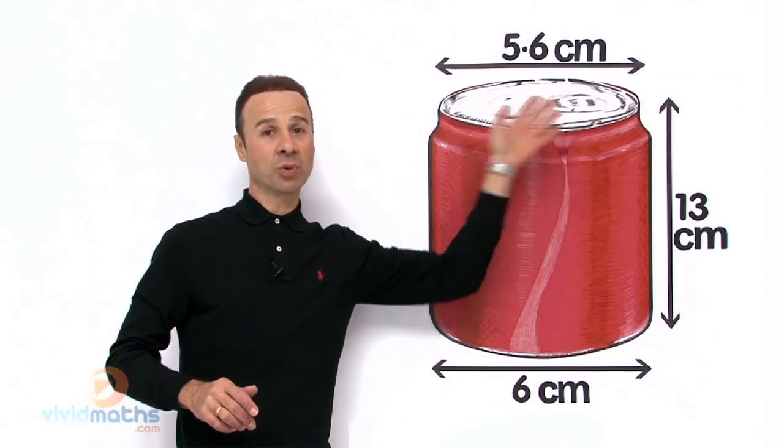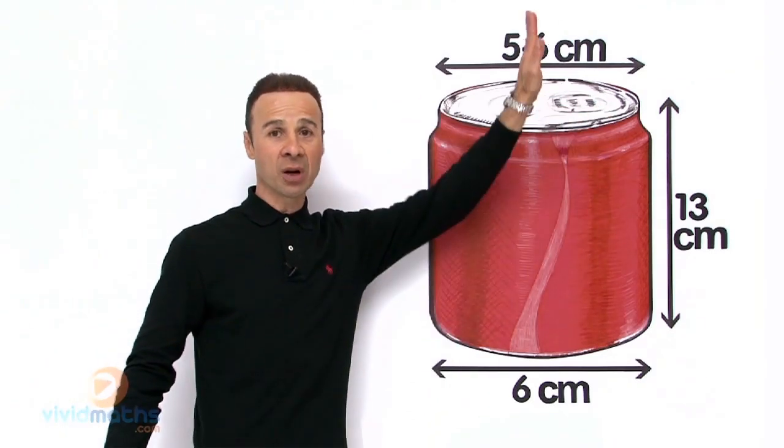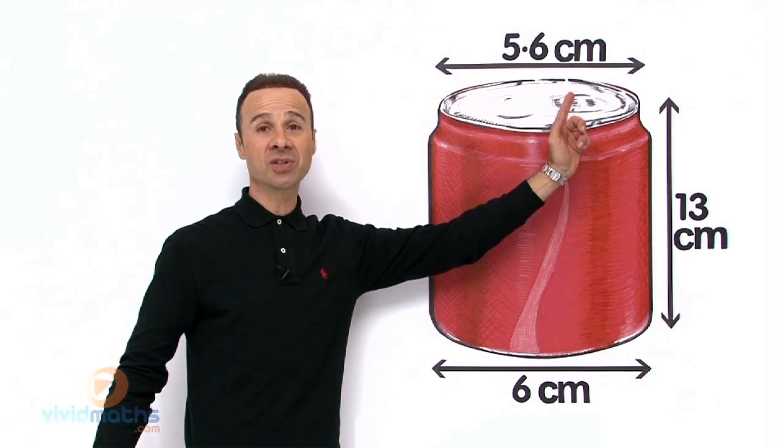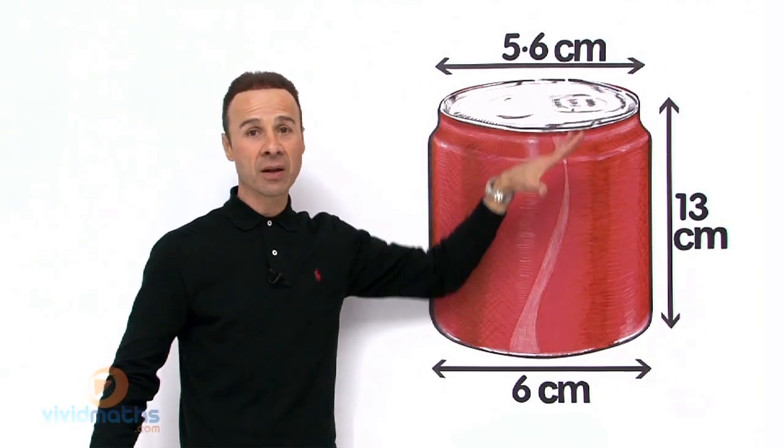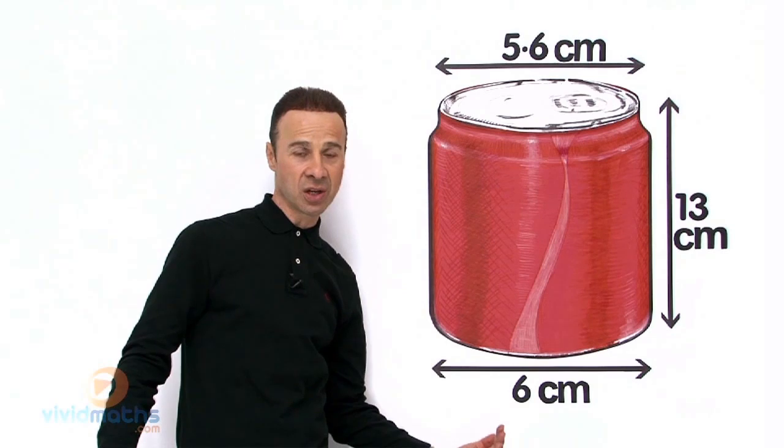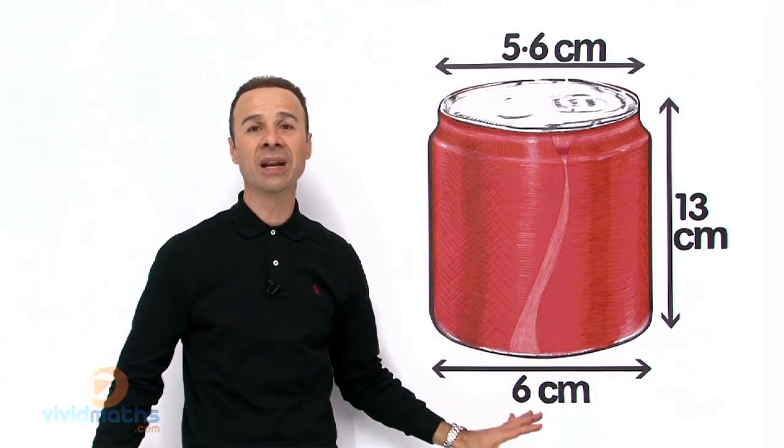Quite simply we are going to halve that. We have 5.6cm, we are going to work out the radius there. At the bottom here it is a bigger radius, it is 6cm, we are going to halve that too and get the radius there.